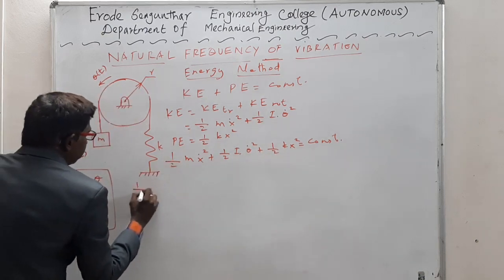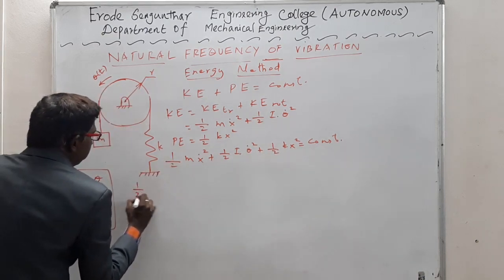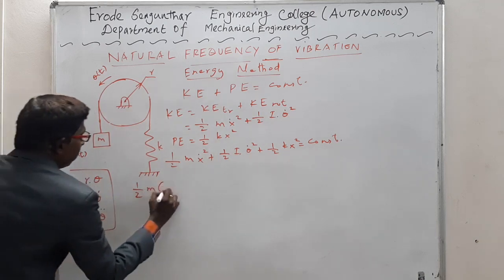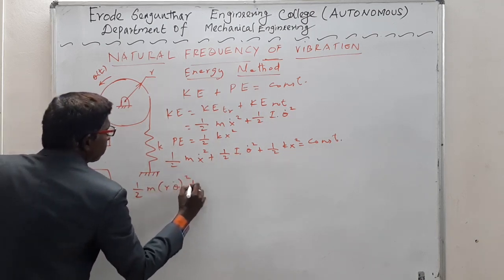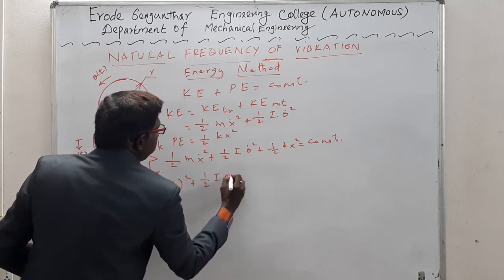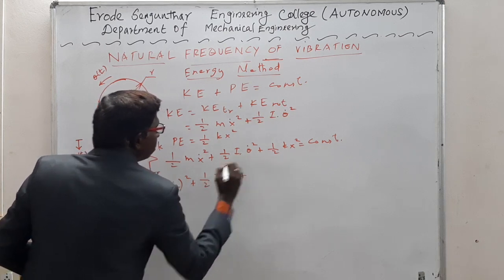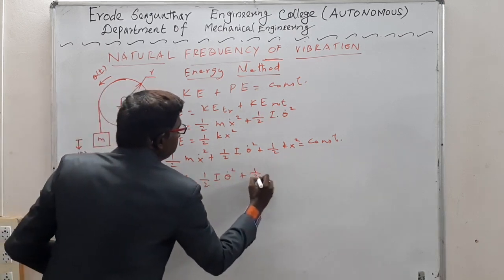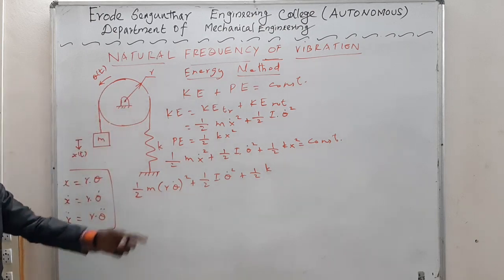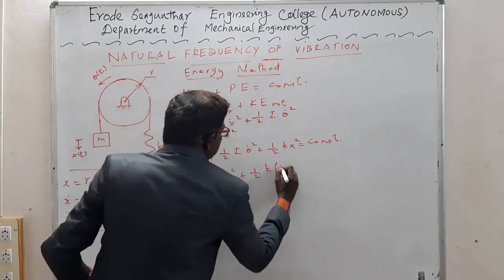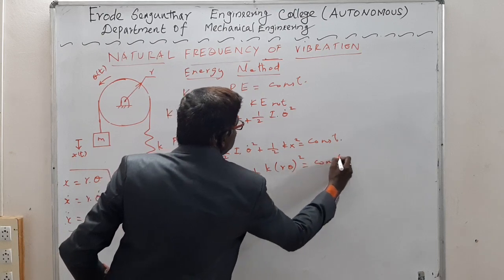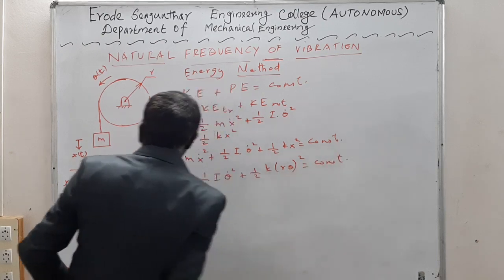The first term will become (1/2)m(rθ̇)². The second term remains (1/2)Iθ̇². The third term can be written as (1/2)k(rθ)², and the summation equals constant.